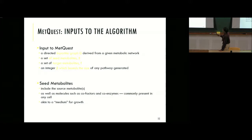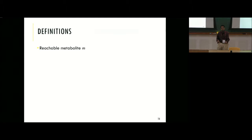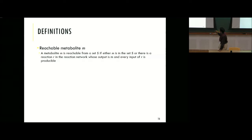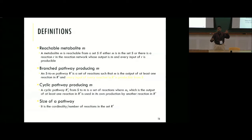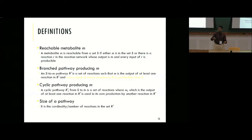The seed metabolites include the source as well as cofactors and coenzymes — a medium for growth. A reachable metabolite is one that can be produced given a set of seed metabolites and a metabolic network. Either there is a reaction R whose output is M and every input of that reaction is already producible, or if one input is missing, the reaction cannot fire. The size of the pathway is the complete reaction set required to produce the target. It could be a bunch of linear pathways: you need one to produce X, one to produce Y, and then X plus Y gives Z, your target.